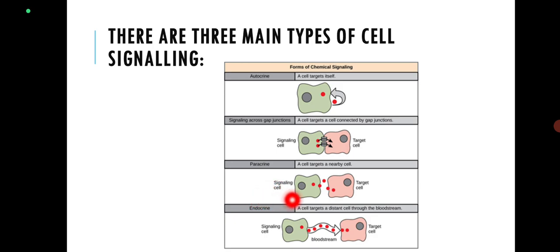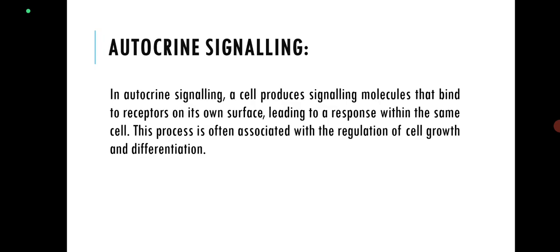The third mechanism is endocrine signaling. Here, a signaling molecule is produced by one particular cell, then diffused into the bloodstream. Through the bloodstream, the signaling molecule reaches almost all parts of the body. The action of the signaling molecule happens over a long distance. These are the three different types of signaling mechanisms existing in multicellular and unicellular organisms.